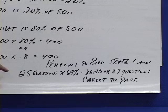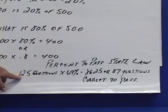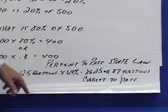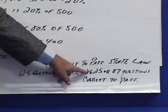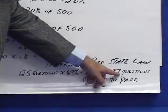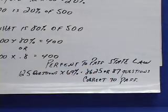Let's determine how many questions we need to answer correctly in order to pass the state test. On the law test there are 125 questions. You need to get 69% correct to pass. Therefore, 125 times 0.69 equals 86.25, which we would round up to 87. You would therefore need 87 correct questions to pass the law test.